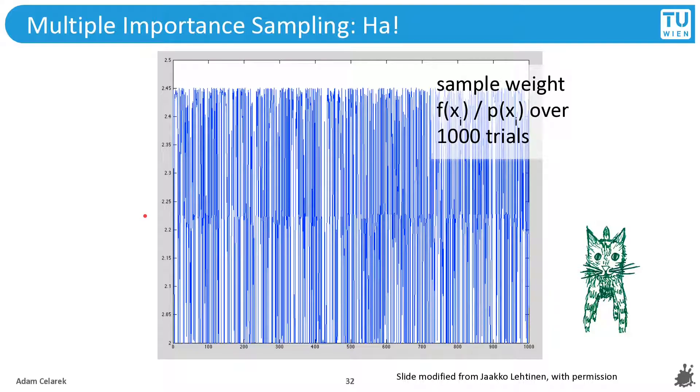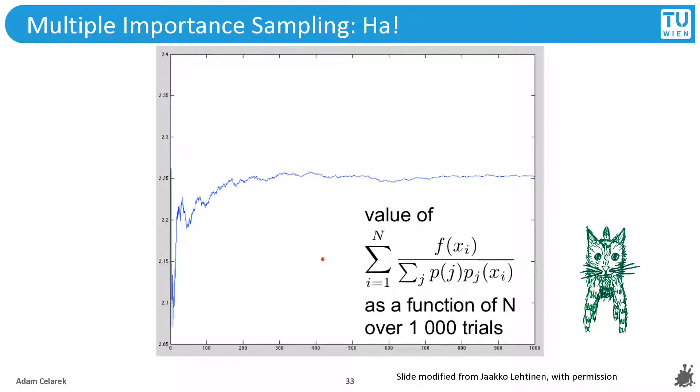And okay, what about the results? So here we have plotted the sample weight f over the probability over 100 trials. And you can see we don't have the spikes that we saw before. It's all within more or less okayish bounds.